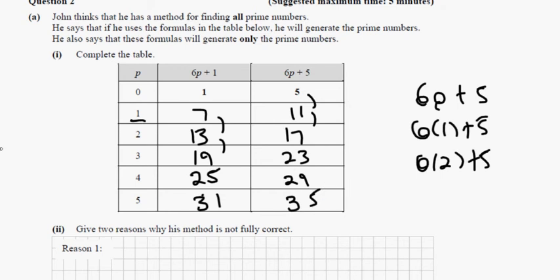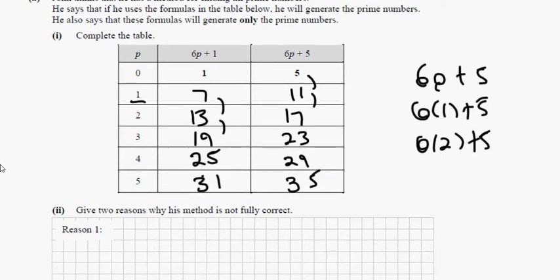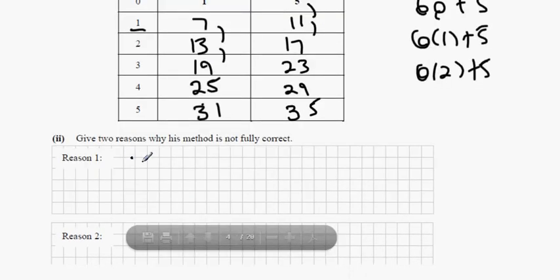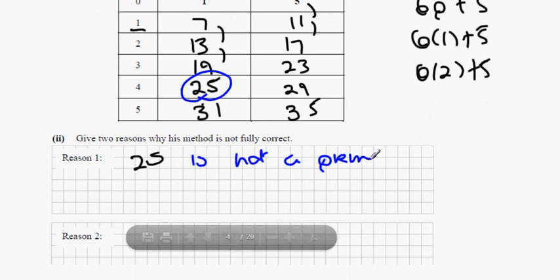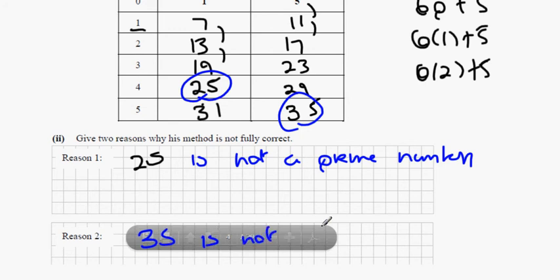Give two reasons why his method is not fully correct. Reason one is 25 is not a prime number. Reason two is 35 is not a prime number. So those are two reasons why his method didn't work.